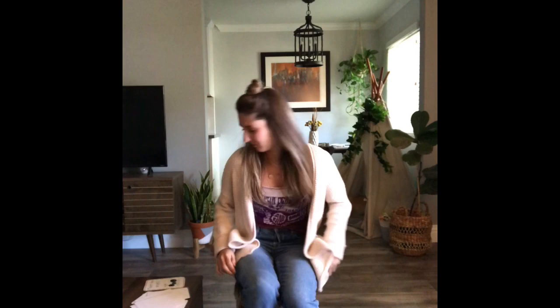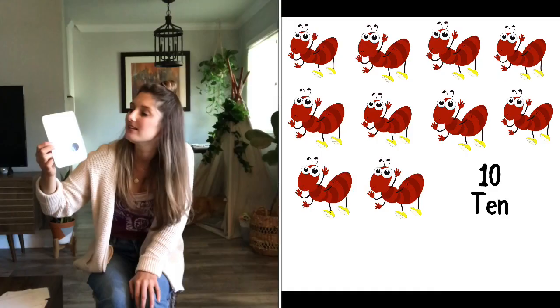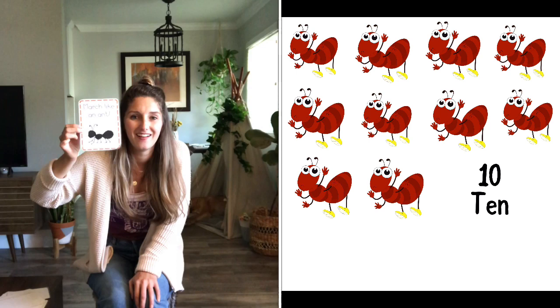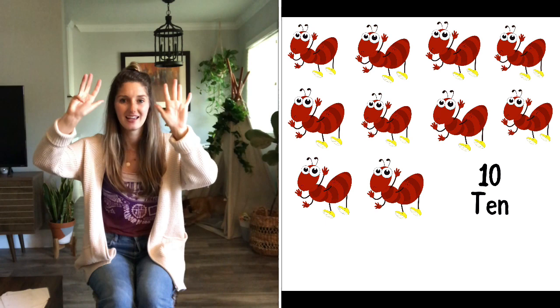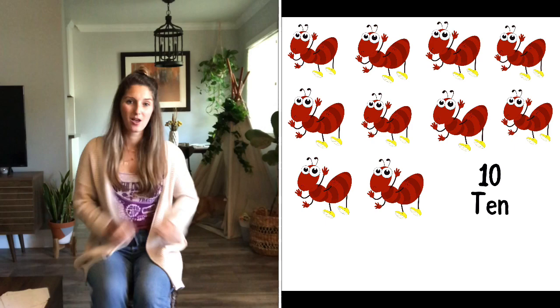And we have our last one. Do you know what this insect is? Good. It's an ant. It says march like an ant. We're going to count together for this last one. One, two, three, four, five, six, seven, eight, nine, ten. We get to march ten times. Ready, friends? One, two, three, four, five, six, seven, eight, nine, ten.